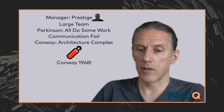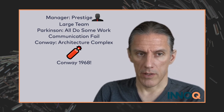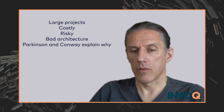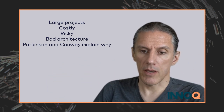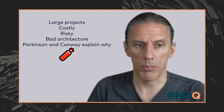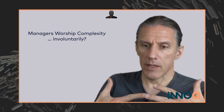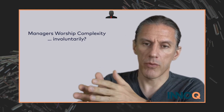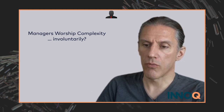The manager is aiming for prestige — for a large team — and because Parkinson's Law says all of them will do at least some work, communication will fail. Then Conway's Law says the architecture is also complex, and you end up in a quite bad state. This is what Conway said in 1968, so it's something we've known for a long time — that paper is actually older than me. So large projects are costly, risky, and might have a bad architecture. Parkinson's Law and Conway's Law together explain why this is the case.